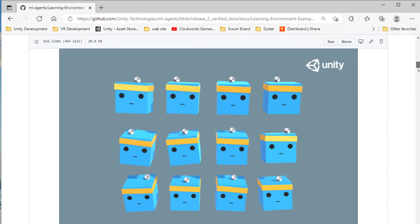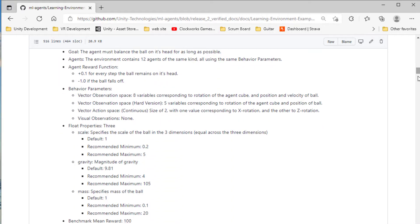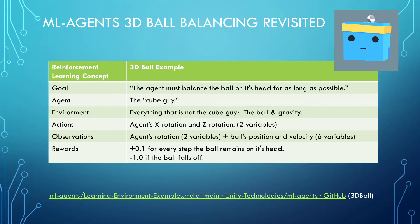How was this formulated as a reinforcement learning problem? Unity's documentation on the examples tells us this. I've formatted the key elements in a table that might be a bit simpler to look at. So in this example, the agent is the cube guy. The environment is everything that's not the cube guy, which is the ball and the laws of physics. The goal is for the agent to balance the ball on its head for as long as possible. And then we will talk about the observations, actions, and rewards as we work through the example.